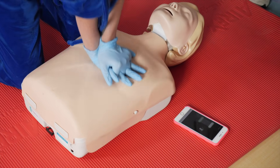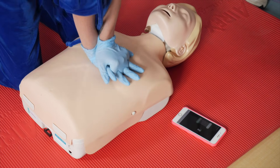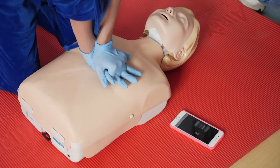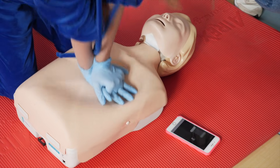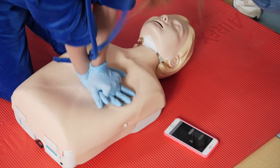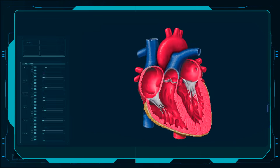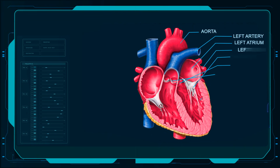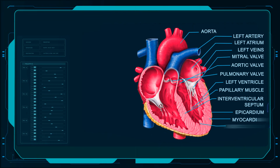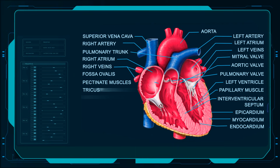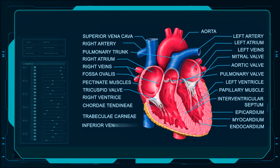Initial assessment and emergency response: your first action is to assess consciousness. Firmly tap the person's shoulder while calling out loudly. No response combined with abnormal breathing patterns means one thing — call emergency services immediately, or direct someone specific to make that call.